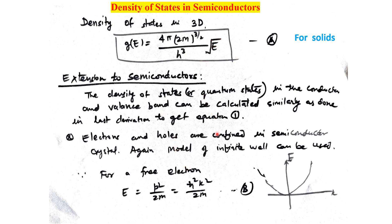In the case of a semiconductor, we must account for the valence band energy and conduction band energy. For the density of states in semiconductors, we use the free-electron relation E = p² / 2m = ℏ²k² / 2m as a starting point.